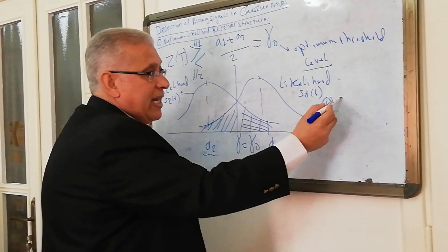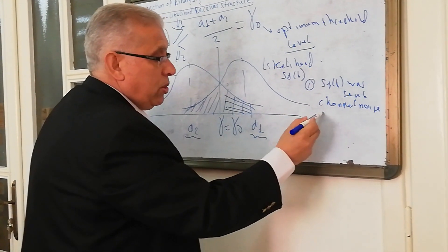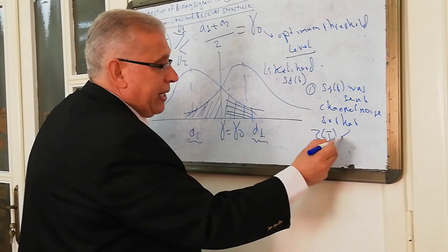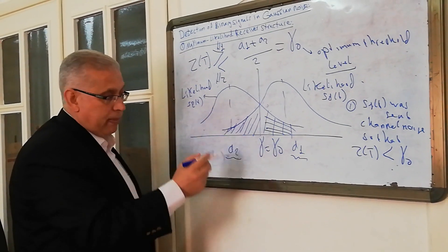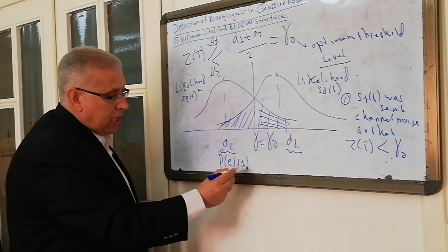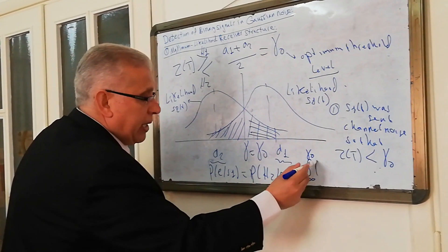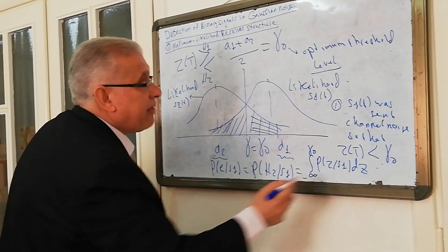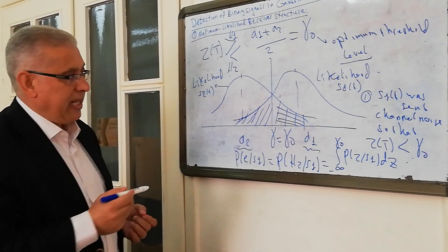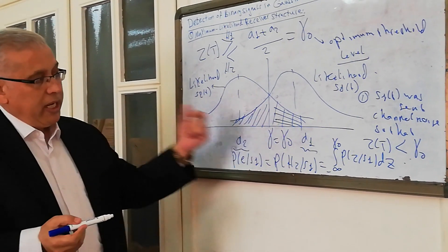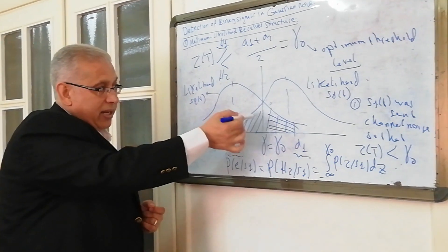The first type of error: S1 was sent, but channel noise affects the output so that Z(T) will be less than the threshold level. In this case, P(E|S1) = P(H2|S1), which equals the integration from minus infinity up to the threshold of p(Z|S1) dZ. This is the first type of error — we have the tail here. The bit error probability is calculated as the area under the tail on either side, right or left.